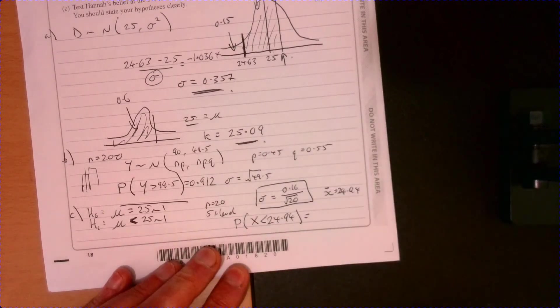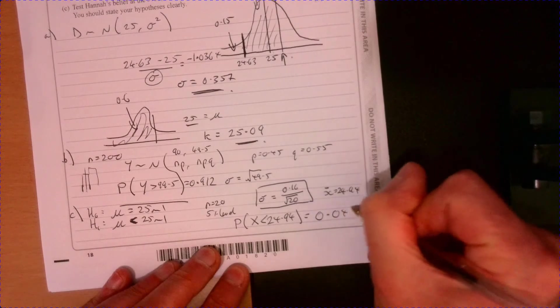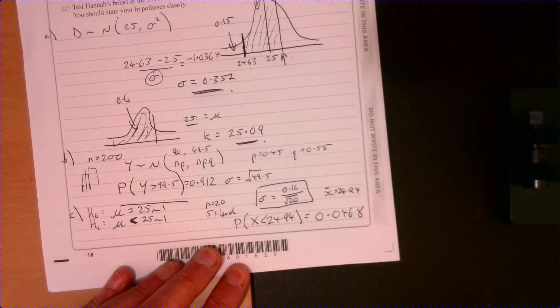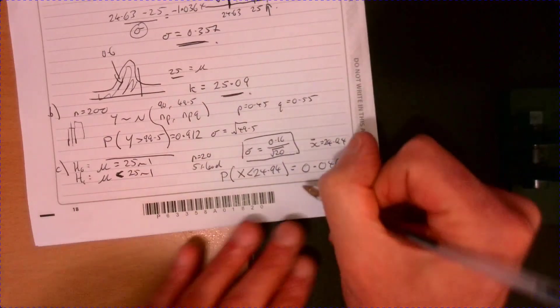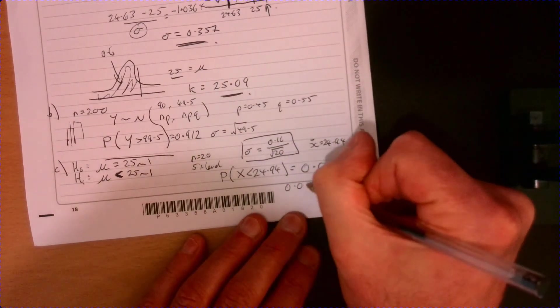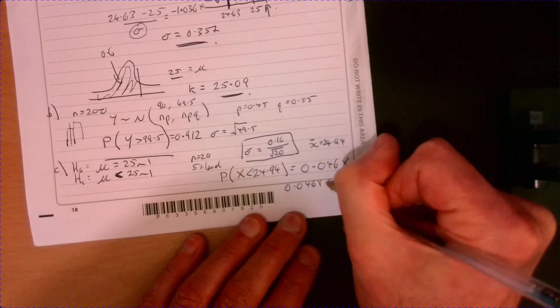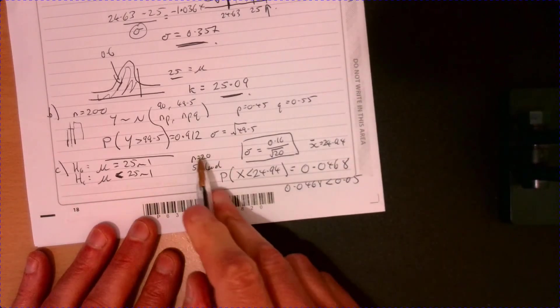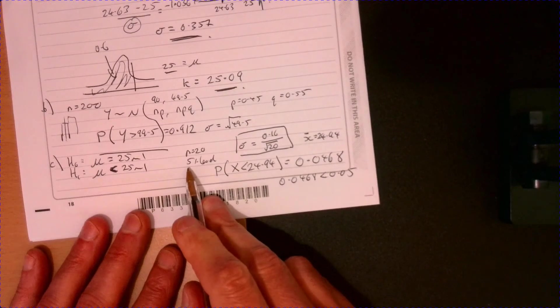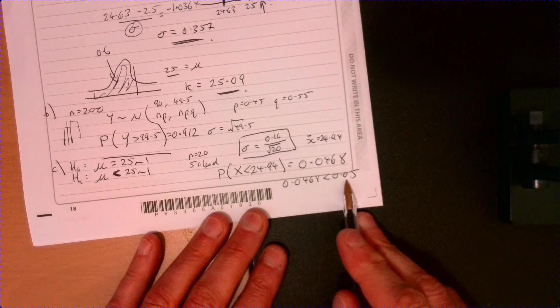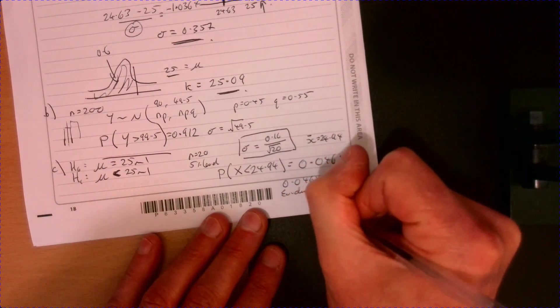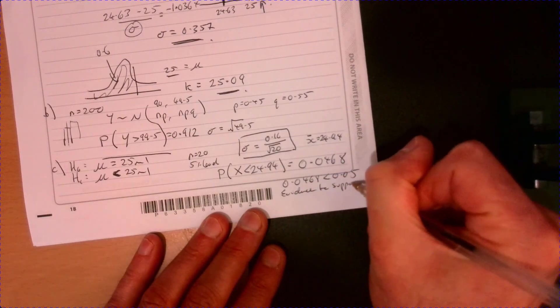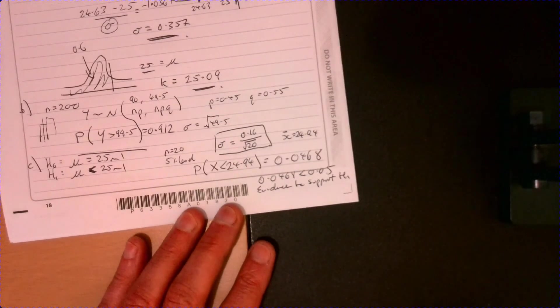So the calculation that we need to carry out here is what is this figure here. We've got our parameters. We've got this. And then we're working with the 25. So if you just plug that in, we get 0.0468. So 0.0468. So we need to write something like this is below 0.05. Remember, we're working a 5 percent level of significance, which is what the question asked us to do.